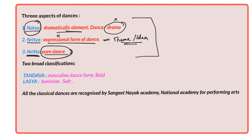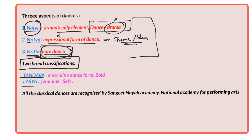One needs to remember these three aspects when talking about classical dances of India — we will try to know which element dominates in each classical dance. Sometimes, as in Kathak, it is dominated by Natya involving both dance and drama, while in some dances it is mostly Nrita. Classical dances are also classified into two forms: Tandava and Lasya. Tandava is a bold, masculine dance form, while Lasya shows a very feminine, soft character.